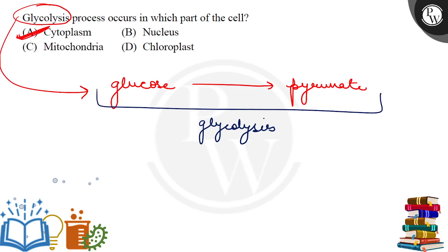This is a universal process, it is in almost every cell, whether it is prokaryotic, eukaryotic, animal, or plant cell. In every cell, glucose into pyruvate occurs in the cytoplasm. So the correct answer is option A.